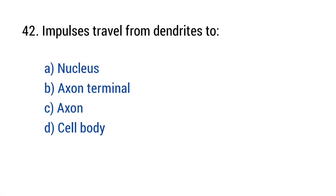Question number forty-two. Impulses travel from dendrites to? The right answer is option D: Cell body.